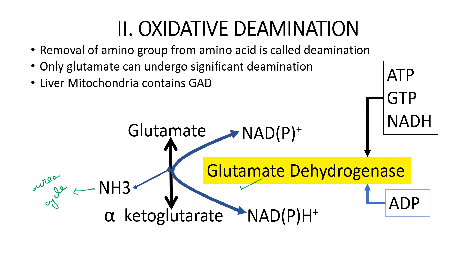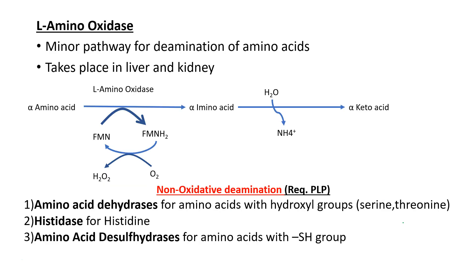This enzyme requires NADP+ and it is a reversible reaction. Glutamate dehydrogenase is inhibited by ATP, GTP, NADH, steroid hormones, and thyroid hormones; it is activated by ADP. A minor pathway of deamination is the L-amino acid oxidase pathway, which occurs in the liver and kidney and requires FMN, in contrast to glutamate dehydrogenase which requires NADP+.